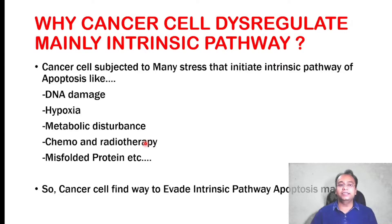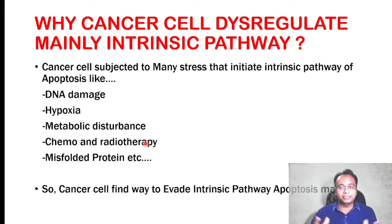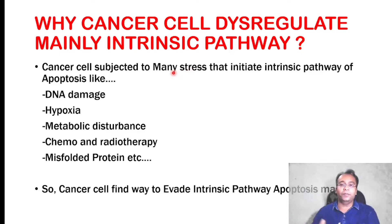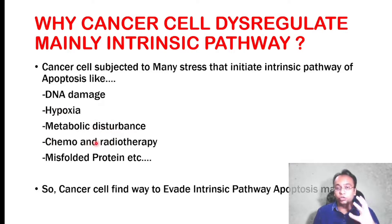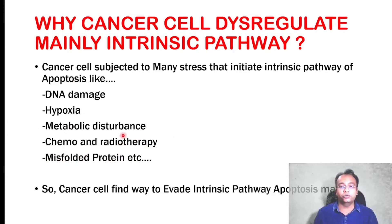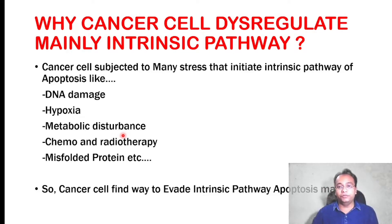In cancer there is a dysregulation of the intrinsic pathway — cancer cells find the way to escape the intrinsic pathway mainly. Why? Because cancer cells are subjected primarily to stress that initiates the intrinsic pathway of apoptosis. The stresses a cancer cell faces include DNA damage, reduced oxygen availability, metabolic disturbance, chemotherapy or radiotherapy commonly given in cancer, and misfolded proteins. All these cellular stresses activate the intrinsic pathway, through which cancer cells can be cleared — so cancer cells must find a way to evade it.